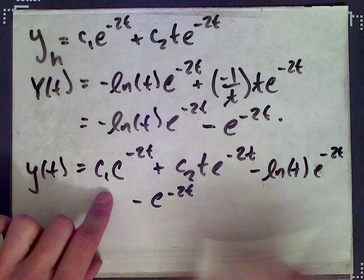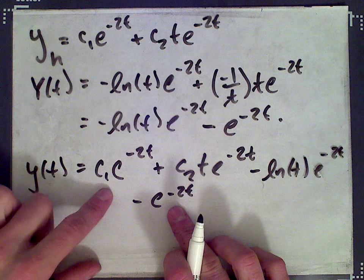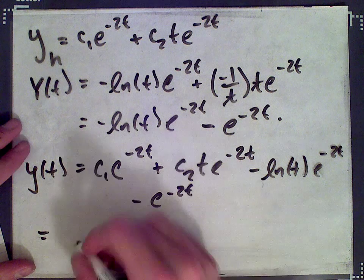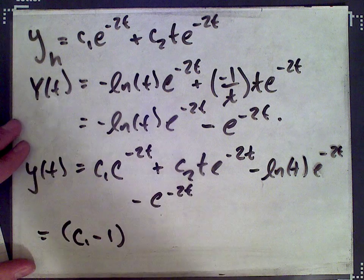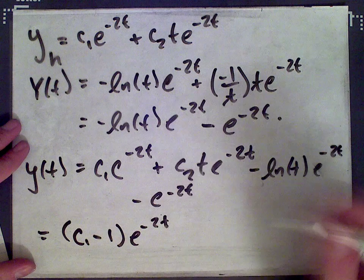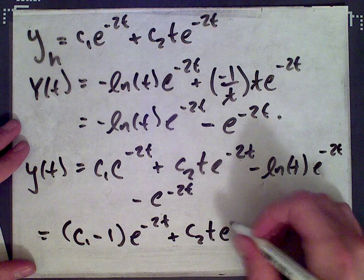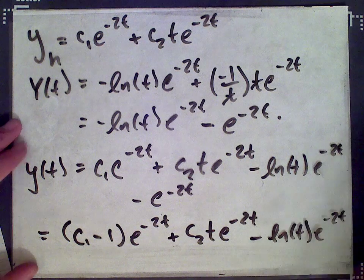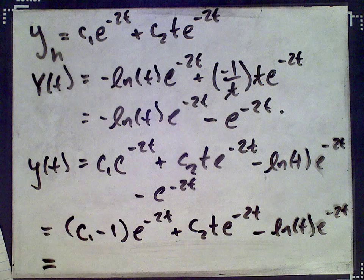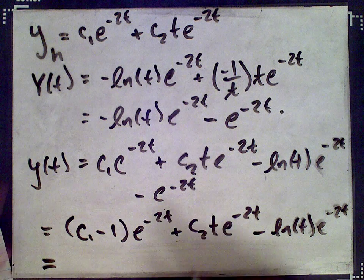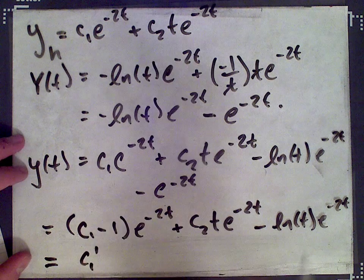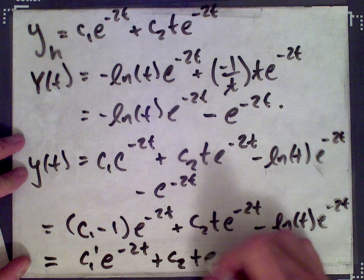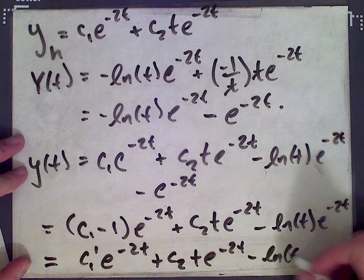There are two factors of e^{-2t} here: c1·e^{-2t} and -1·e^{-2t}. Since c1 is an arbitrary constant, so is c1 - 1. So this can be written as c1'·e^{-2t} + c2t·e^{-2t} - ln(t)·e^{-2t}, where c1' = c1 - 1 is just another arbitrary constant.